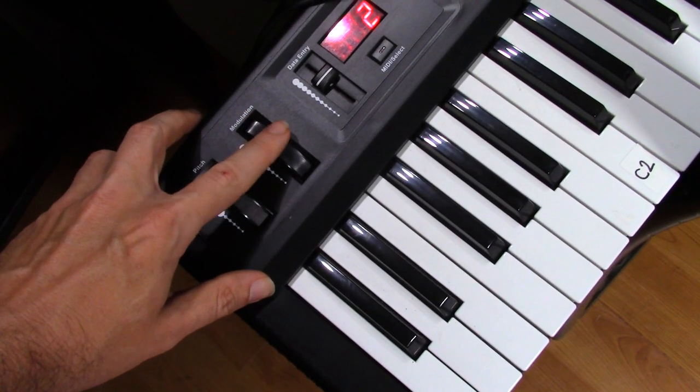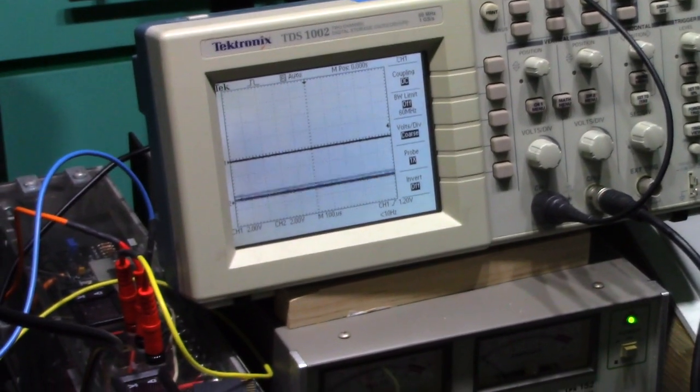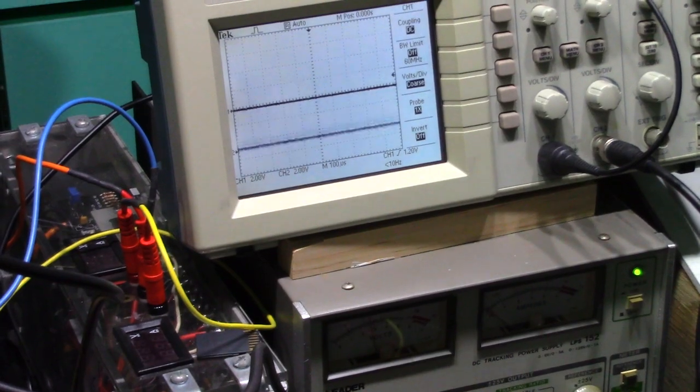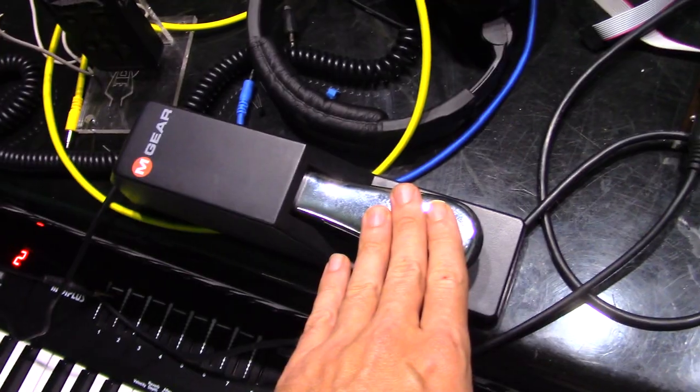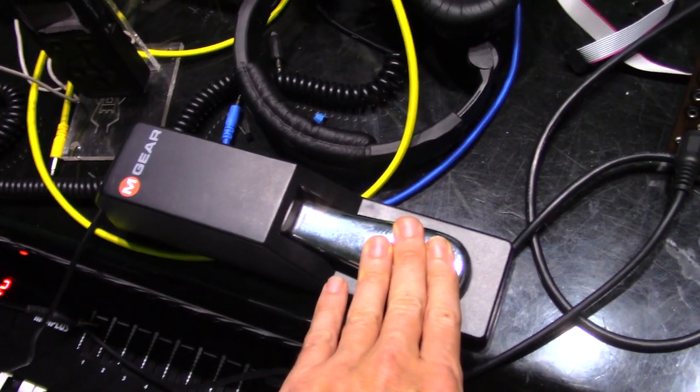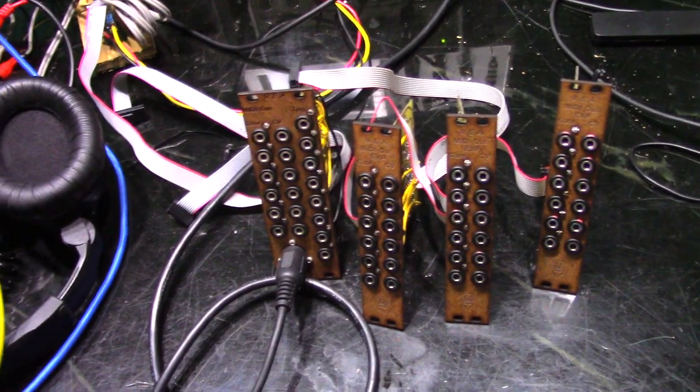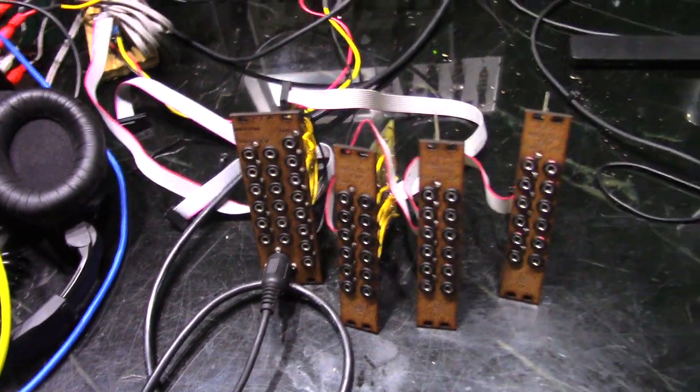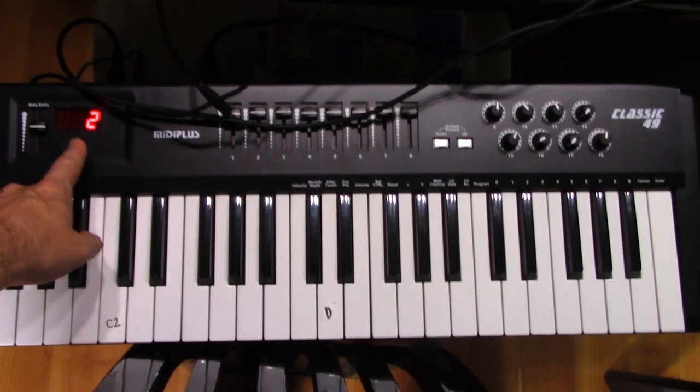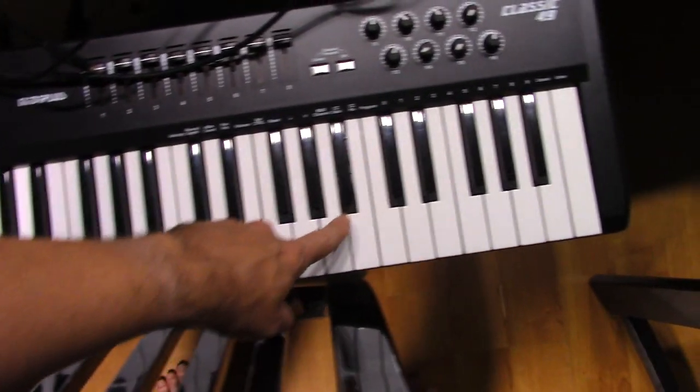Turning the modulation wheel, and its CV output changes. Press the sustain pedal, and that output goes high. Change the MIDI channel on the keyboard, and now the modules respond to the new channel.